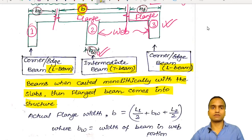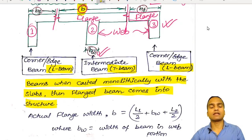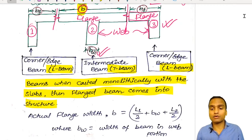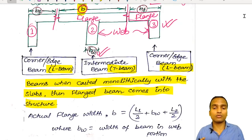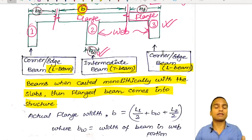In any multi-storey building, T-beams and L-shaped beams are present in almost every room, terrace, or slab. The question remains: how much length of the flange do we have to take from the slab? Not the entire length of the slab will contribute to the strength of the flanged beam. So how much length do we take for the flanges on either side of the beams?